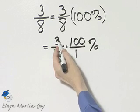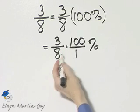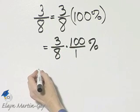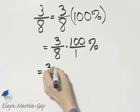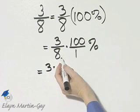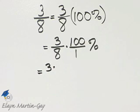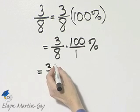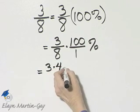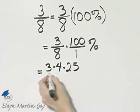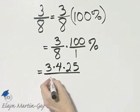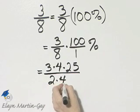Remember how we multiply fractions? Numerator times numerator over denominator times denominator. So I'll write that as numerator times. Now at the same time, I notice 8 and 100 have a common factor of 4. So I'll write 100 as 4 times 25, and I'll write 8 as 2 times 4.